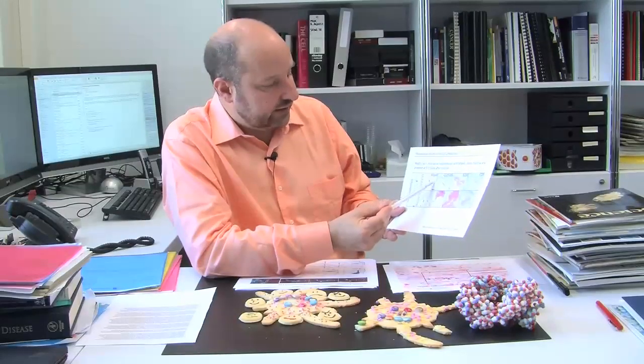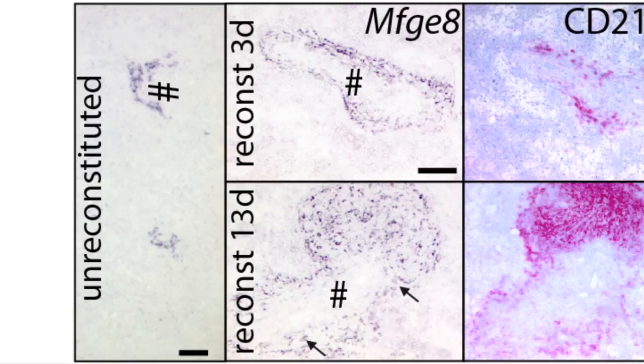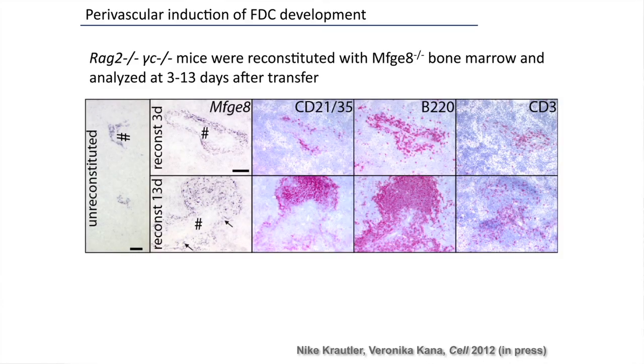These are all the MFGE8-positive cells. After 3 days and after 13 days, you can see that a lymph follicle is being created around the area where the cells have arisen. Here you see in real time how the lymph follicle arises and is structured by MFGE8-positive cells. Because these cells are around the vessel, we thought they might be pericytes.